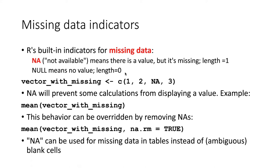R actually has several indicators for missing data. The most important one is NA, which stands for not available. When there is a value of NA, that means that we know there should be a value there, but it's missing. We don't know what it is.